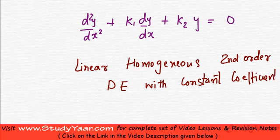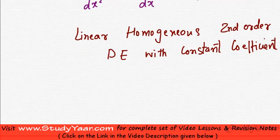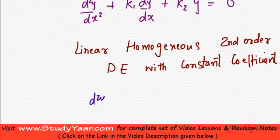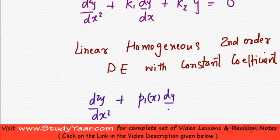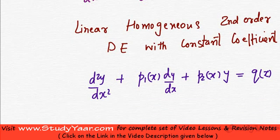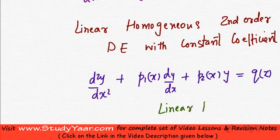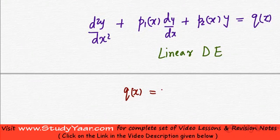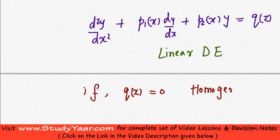Let us understand what this means. In general, a second order differential equation is linear if you have d²y/dx² plus p1(x) dy/dx plus p2(x) y equals q(x). If your second order differential equation is like this, then this is called a linear differential equation. If q(x) equals 0, then it is called a homogeneous linear differential equation.